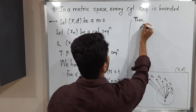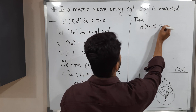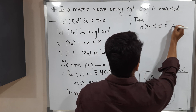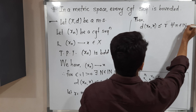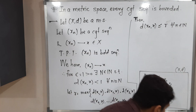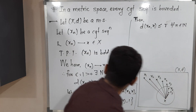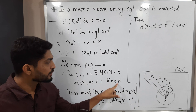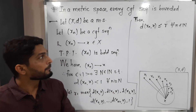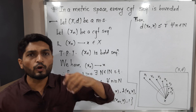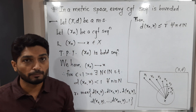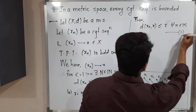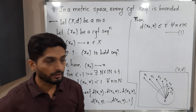Therefore d(xn, x) is less than or equal to R for all n in the set of natural numbers. This is important: the earlier statement said d(xn, x) < 1 only for n greater than or equal to N, but this new statement is true for all natural numbers n. Let us call this statement (1) and use it going forward.